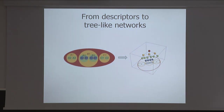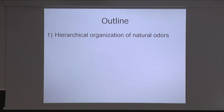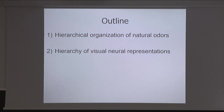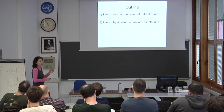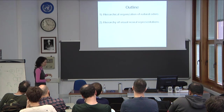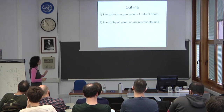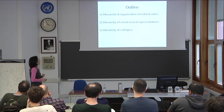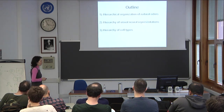I've roughly organized the talk into three parts. I will talk about hierarchical organization of natural odors — an example of natural scene statistics. Then we'll talk about neural representations, going inside the nervous system, where I'll switch modalities to talk about vision, one of the best-studied systems in neuroscience. The third part will be application of symmetry breaking to understand cell types that are encoded to one dimension.